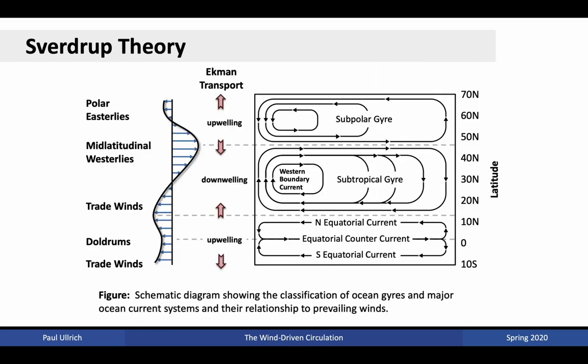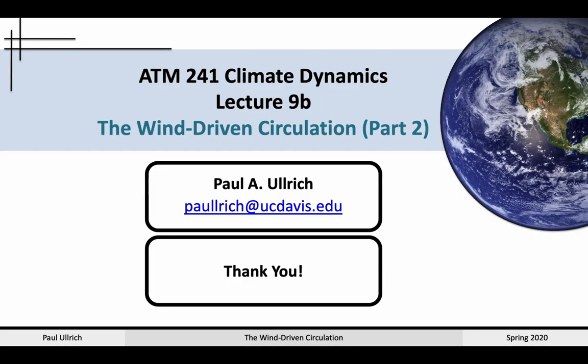Here is an idealized image summarizing the previous discussion. Mid-latitudinal westerlies are associated with westerly currents; trade wind regions are associated with easterly currents. These bound the subtropical gyres — the largest rotational features of the ocean. The doldrums, associated with a negative second derivative of wind stress, give rise to the equatorial counter current. North and south of the counter current, the subtropical gyre extents produce easterly flow. Ekman transport induces downwelling through the subtropical gyre and upwelling in the subpolar gyres and equatorial band. That's all for today — thank you very much.